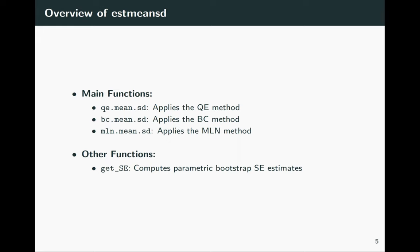To apply these methods in the smeandsd package, we use the main functions shown here. The qe.mean.sd function applies the QE method, while the bc.mean.sd and mln.mean.sd functions apply the BC and MLN methods respectively. To compute standard error estimates based on bootstrap, we use the get_se function. We'll see how these look in the example in just a couple of slides.